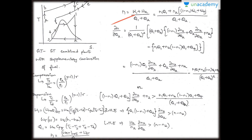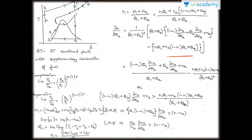ETA is given by W1 plus W2 divided by Q1 plus Q2. Then by adding differential to it or integrating it, you get dETA/dQ2 equals 1 by (Q1 plus Q2) squared into (Q1 plus Q2) into (1 minus ETA1) into (Q1 plus Q4). Additional firing of fuel in the HRSD improves the overall efficiency when dETA/dQ2 is greater than 0.